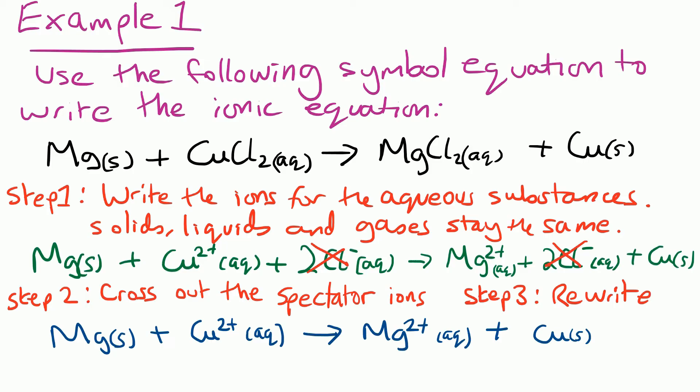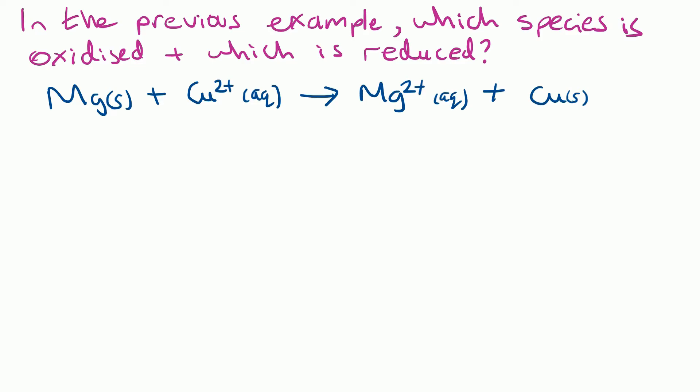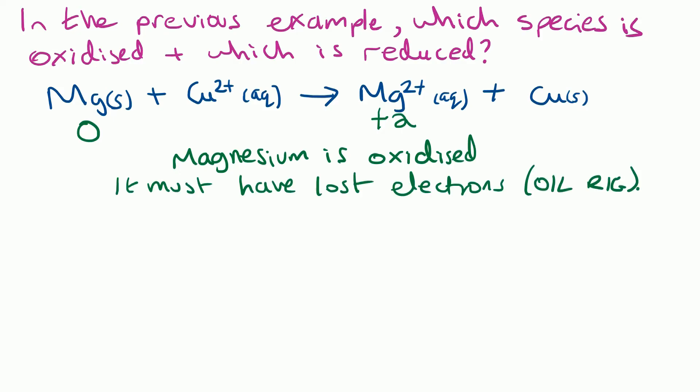Sometimes you also get asked about which species are being reduced and which are being oxidized. In this example, I'll pick magnesium and write the oxidation numbers underneath. Mg as an element has an oxidation number of zero, and the 2+ ion has an oxidation number of +2 — same as the ion's charge. The oxidation number is increasing, so magnesium is oxidized. If the question asks how we know it's oxidized, we answer in terms of electrons: OIL RIG — oxidation is loss of electrons — so magnesium must have lost electrons to become a magnesium ion.